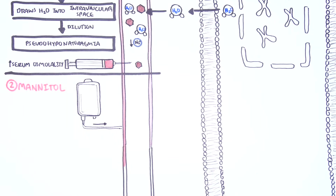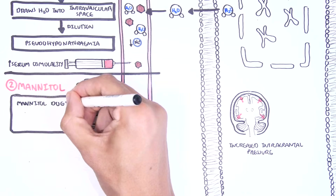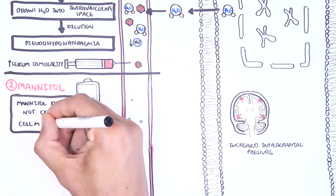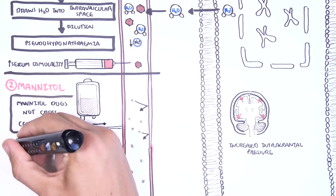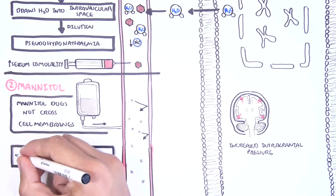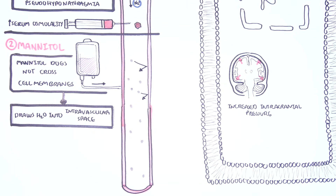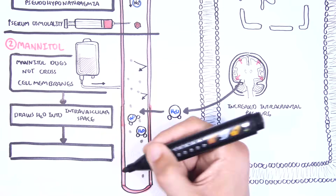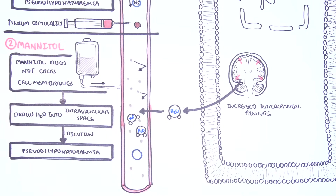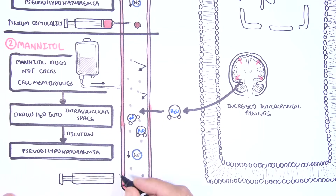Mannitol is used, for example, in cases of increased intracranial pressure. Mannitol is a molecule that cannot move through cells. It functions to reduce the amount of fluid in the interstitium and in the intracellular compartment by drawing the fluid into the intravascular compartment. This will cause pseudohyponatremia as well, and if you take blood and measure serum osmolality, it would be increased.